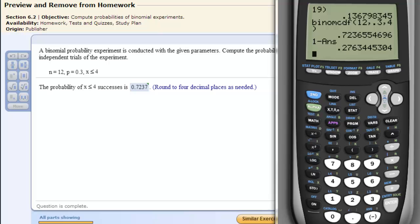That's how you find probabilities with binomial experiments on the TI-83/84 calculator.